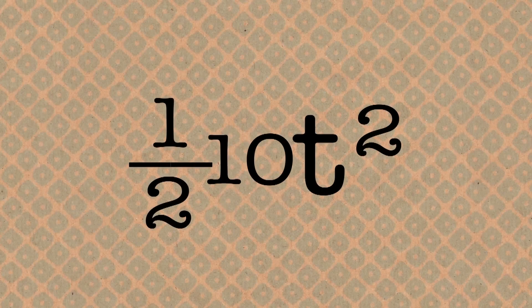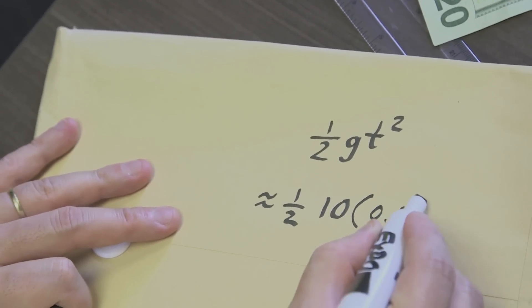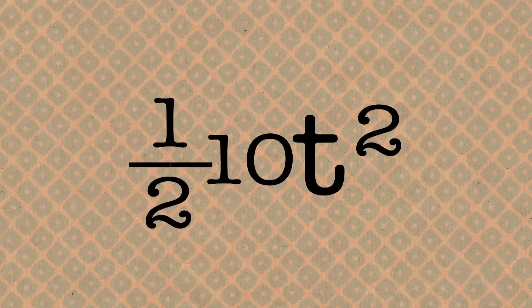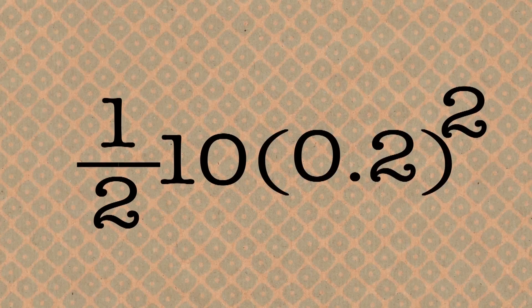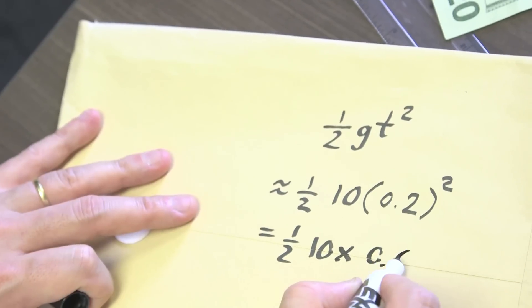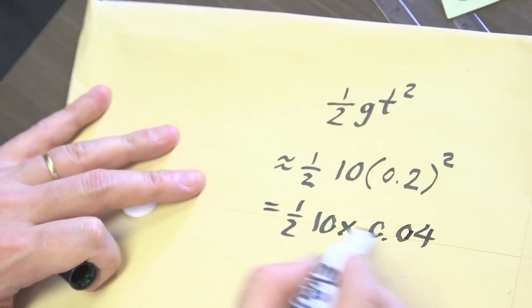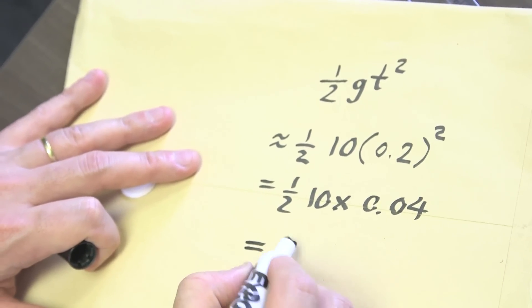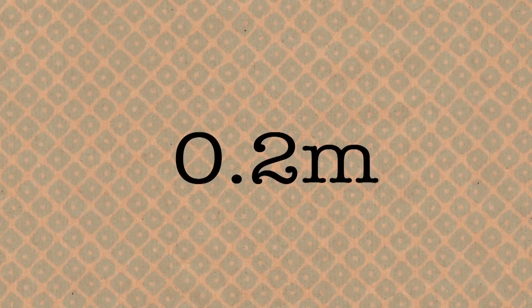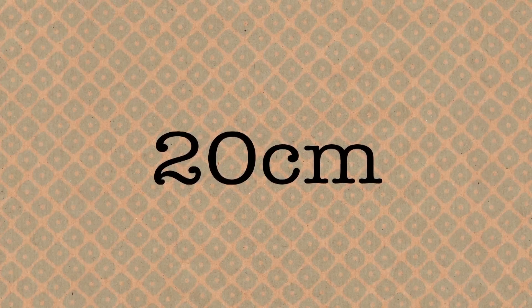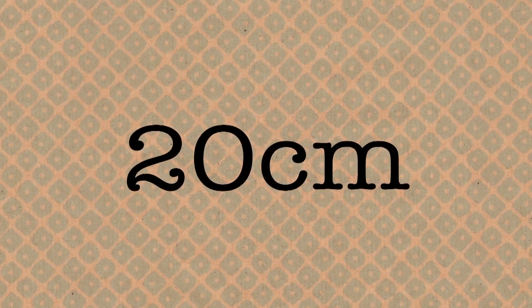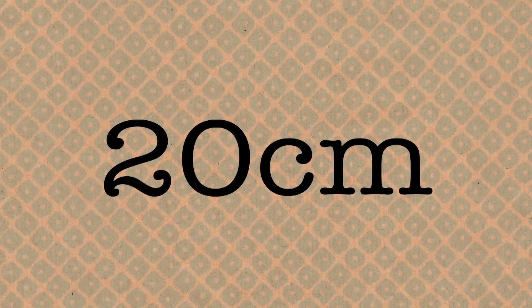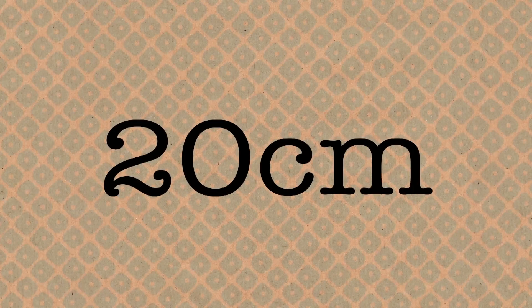G is about 10 meters per second per second. It's 9.8 but that's close enough. T reaction time that we have to catch this is 0.2. So if you square that, that's 0.04. Half that is 0.02 times 10. That is equal to 0.2. That's in meters. That is equal to 20 centimeters approximately. So in the human reaction time, I mean average reaction time, this object falls by 20 centimeters.